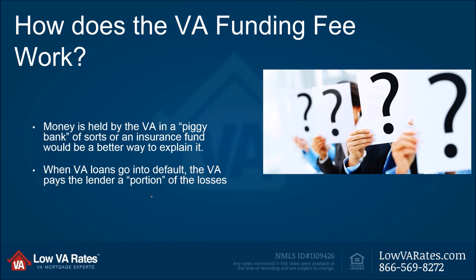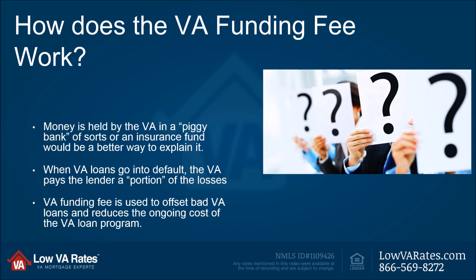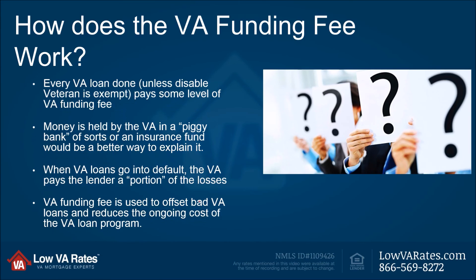When a VA loan goes into default — nobody gets a loan expecting to default, but things happen — the VA pays a portion of the losses the lender could incur as an insurance payout, which the VA calls a guarantee. The VA guarantees a portion of the loan in the event of losses. The funding fee also reduces the ongoing costs associated with managing and administering the VA home loan program.